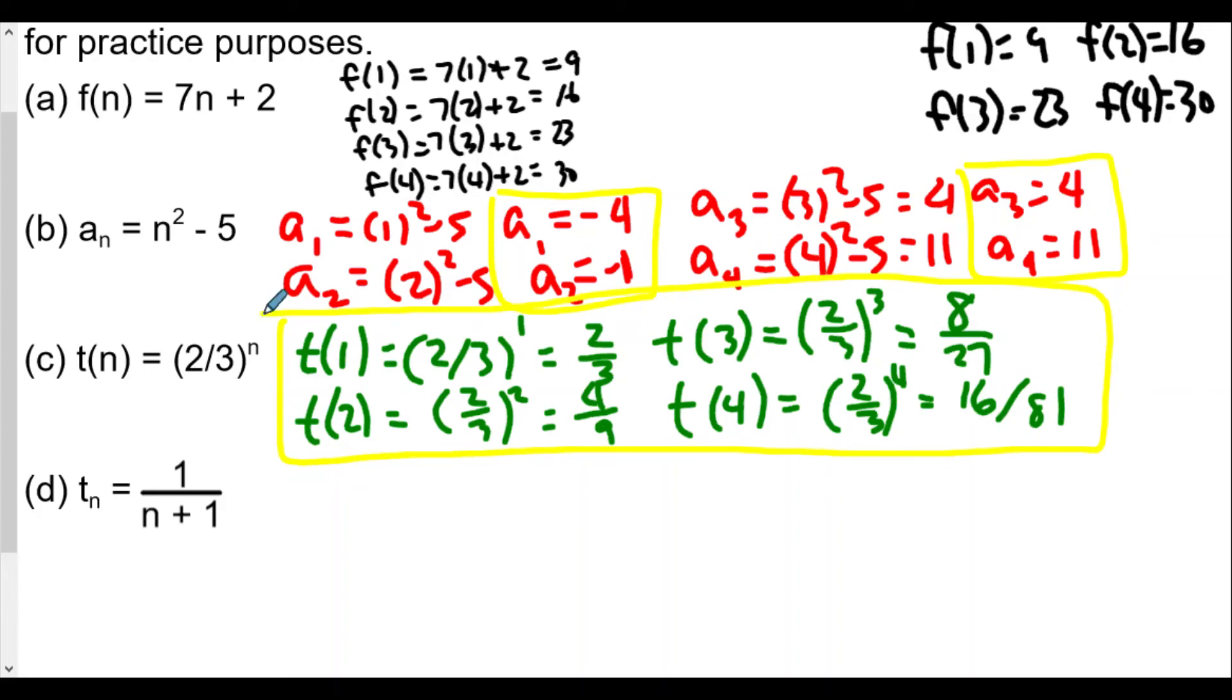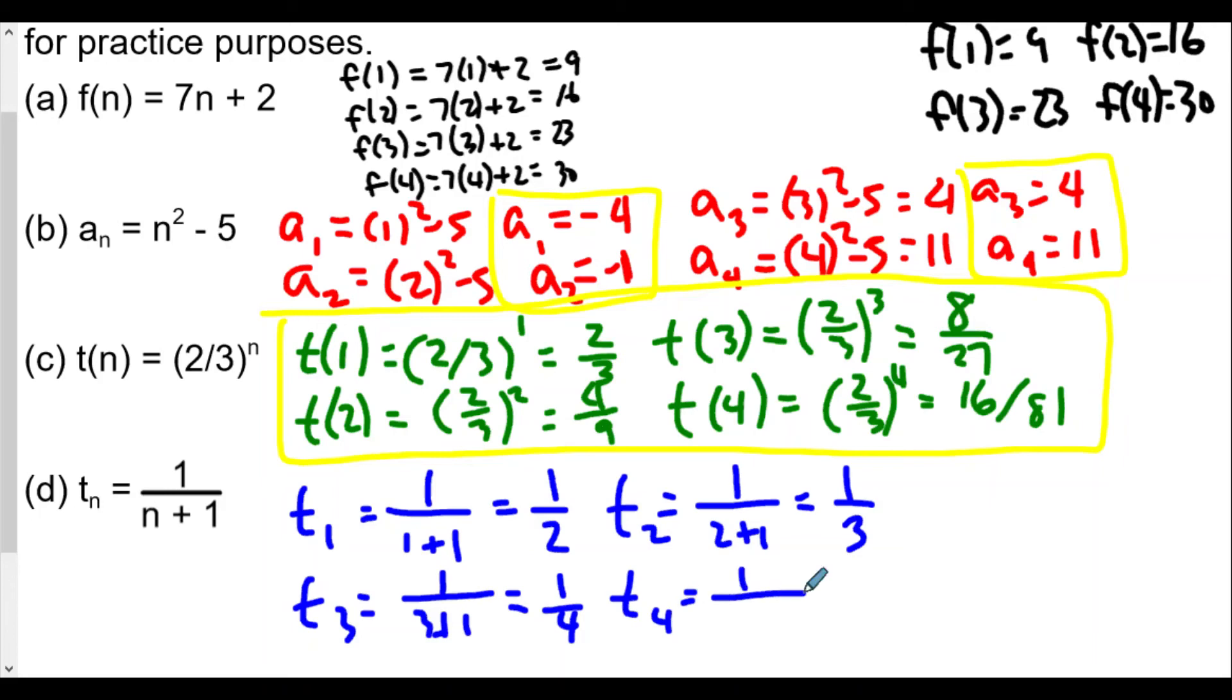Finally, for d we're using the notation t sub n. In this case, n is 1, so t₁ equals 1/(1+1) or 1/2. t₂, our second term, is 1/(2+1) or 1/3. t₃ will be 1/(3+1) or 1/4. Finally, t₄ equals 1/(4+1), and that's 1/5. These are the first four terms of this sequence where t sub n equals 1/(n+1).